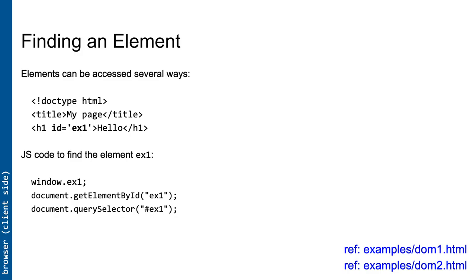You might see the older getElementById method introduced in older browsers, but it's less maintainable. If you originally had an id on an element and then decided you wanted two and changed it to a class, you'd have to change all those function calls. If you use querySelector, you just change your hash into a dot. Remember the cardinal rule: IDs must be unique.